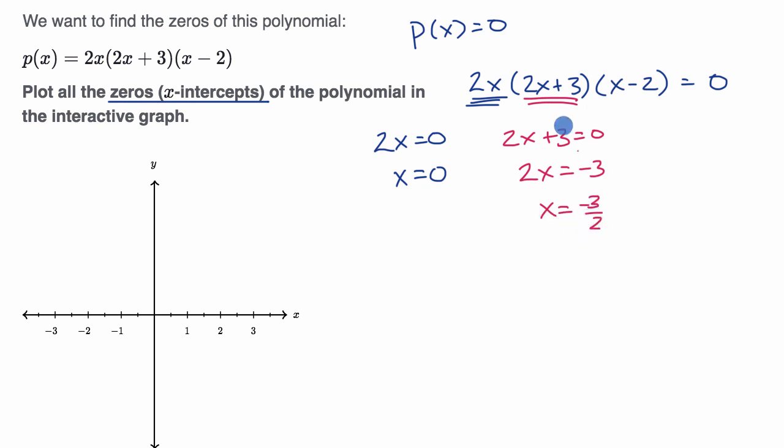So this is another x-value that would make the whole thing zero. Because if x is equal to negative three halves, then 2x+3 is equal to zero. You take a zero times whatever this is and whatever that is, you're going to get zero.